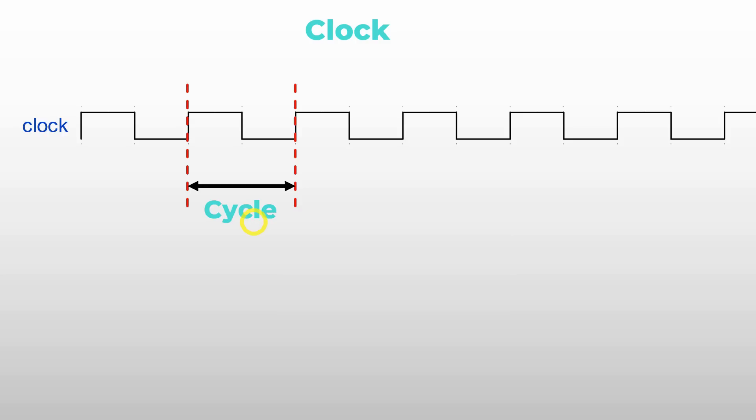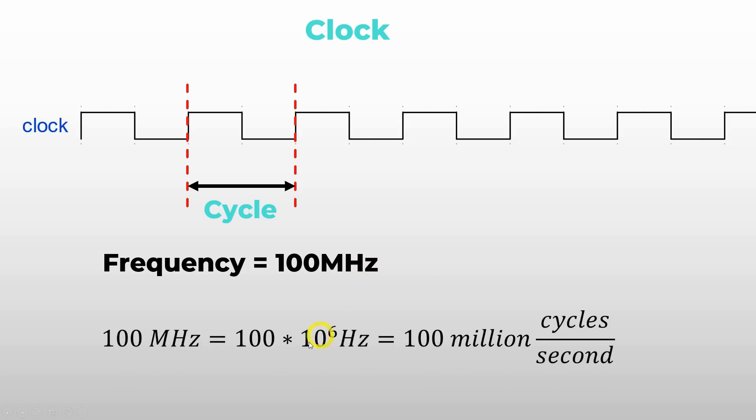For example, a typical clock frequency for an FPGA is 100 MHz. The units of Hz are 1 cycle per second, meaning it's how many cycles per second you can do. So the 100 MHz translates to 100 times 10 to the 6 Hz, which is equal to 100 million cycles per second. This is fast. I mean really fast. Can you imagine this one cycle repeats itself 100 million times in one second?